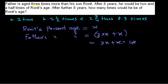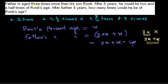Most students make a horrible mistake at this point — they think the father is three times his son's age, so they write the father's age as 3x. But this is not correct. The problem says the father is aged three times MORE than his son, so you need to add Ronit's actual age to get 3x + x = 4x. Father is 4x and son is x, in years.